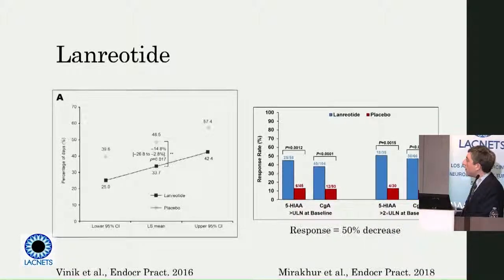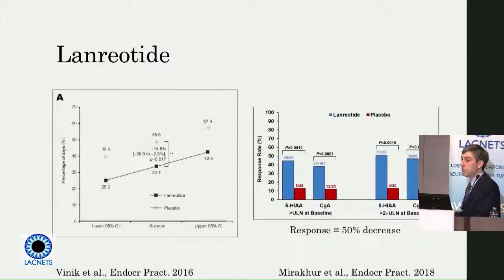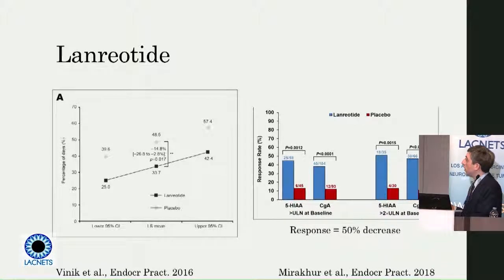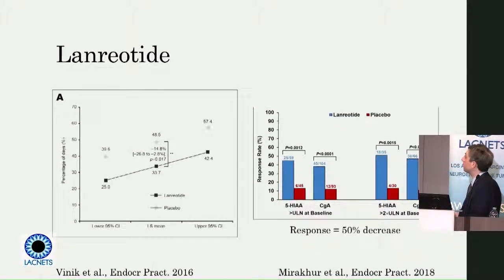Very different style of data with lanreotide. The observation is that yes, you can bring down the 5-HIAA, but also that you can reduce the need for rescue octreotide injections with long-acting lanreotide. This medicine is also FDA-approved for control of carcinoid syndrome, just with a different style of data.